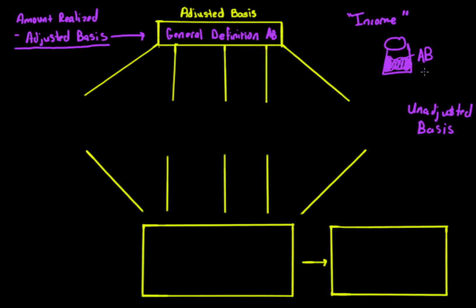Now let's talk about how we actually define adjusted basis. The general definition says we have to look at the rules of unadjusted basis. The first one I want to mention is cost basis — and I'm highlighting this because cost basis makes up 90% of all property out there. Whatever you pay for something is the basis of that item. If you buy a computer for $1,000, the basis is $1,000. If you buy a bottle of water for $2, the basis is $2. That's the most common basis rule — the cost basis principle.